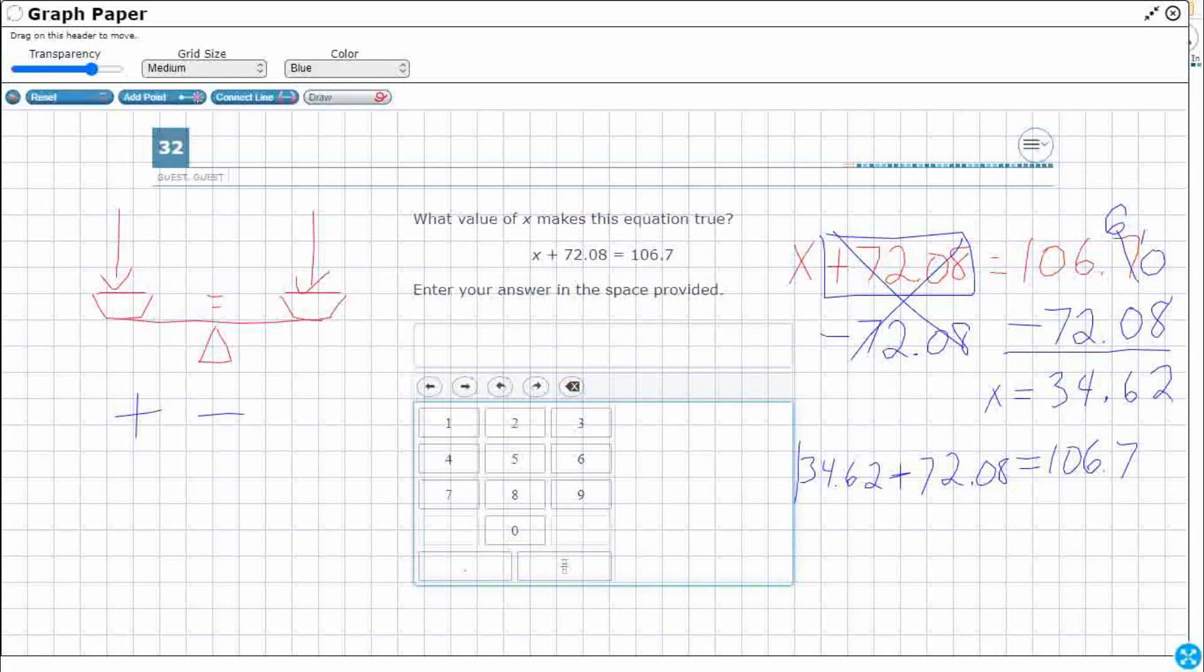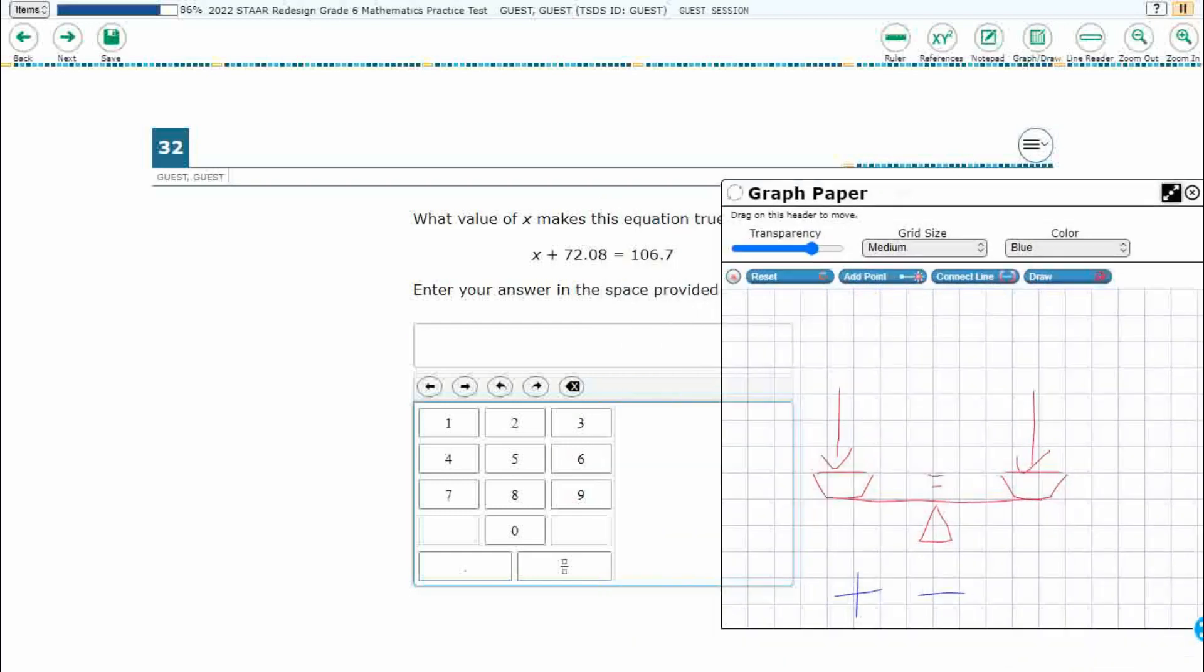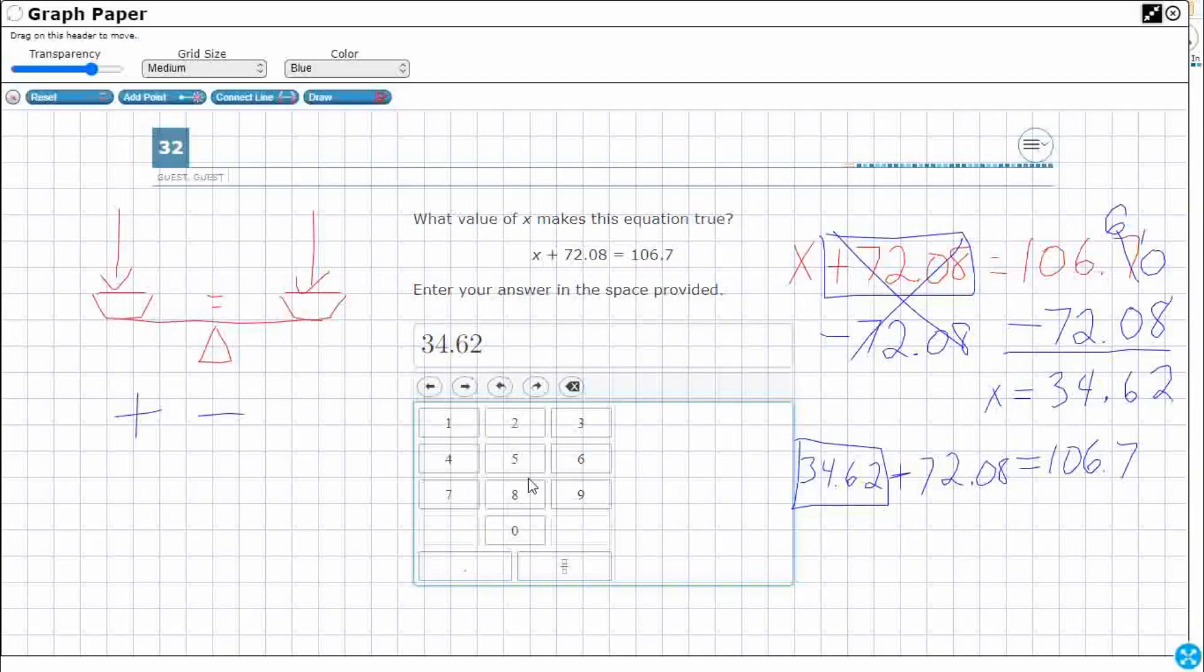Now, how do I enter this? Well, there's two different ways you can enter it. Obviously, the simplest form is going to be just enter it as a decimal. Right? So you can take your 34.62 and just move about your day. And if you want to do that, that is correct.